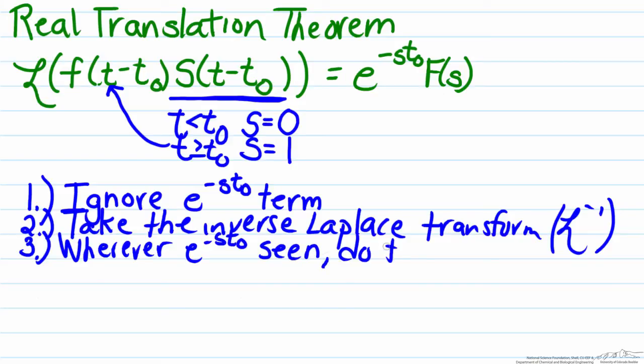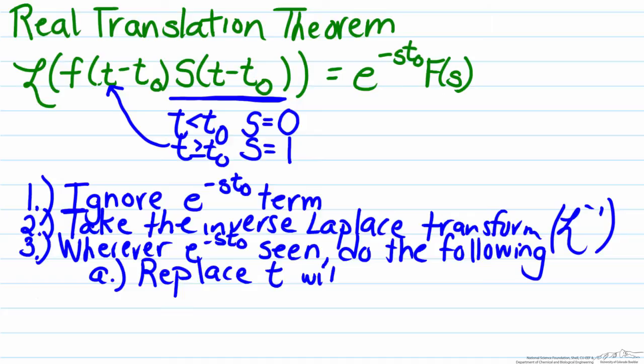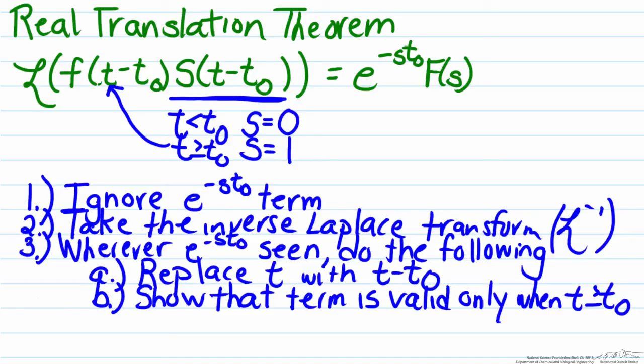And then step three is wherever e to the negative s t₀ is seen, you do the following. And there are two things that you are going to do. The first is replace t with t minus t₀, and b show that the term is valid only when t is greater than or equal to t₀.